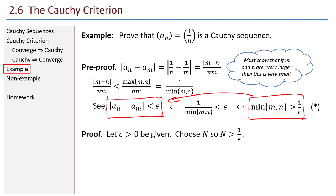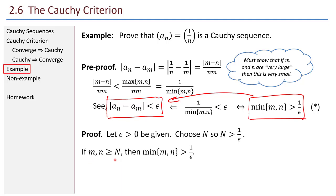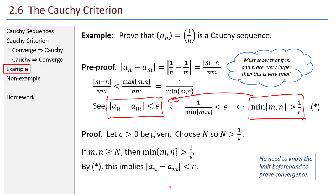This is equivalent to saying the minimum of m and n is greater than 1 over epsilon. So in the official proof: let epsilon greater than zero be given. Choose N so that N is greater than 1 over epsilon. Now if m and n are both greater than N, then the minimum of those two is certainly greater than or equal to N, and so greater than 1 over epsilon. By our earlier result, this implies the difference |a sub n minus a sub m| is less than epsilon, proving the result. Note: there's no need to know the limit beforehand — we never used the fact that 1/n converges to zero.